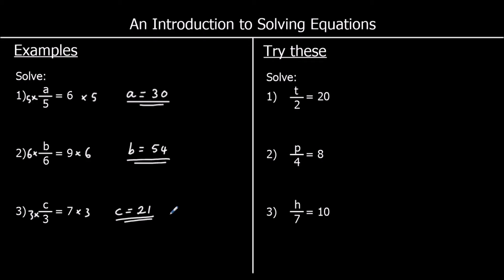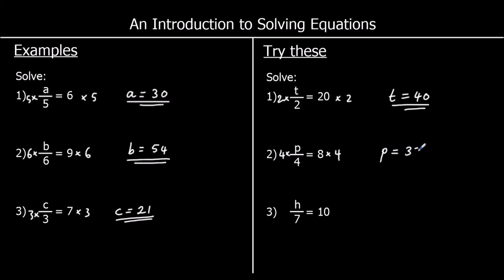3 for you to try, so pause the video and give them a go. Question 1: t divided by 2 equals 20. So multiply both sides by 2, and we get t is equal to 40. For the second one, p divided by 4 equals 8. So multiply both sides by 4, and that gives us p equals 32. And the third one, h over 7 equals 10. So if we multiply both sides by 7, we get h equals 70.